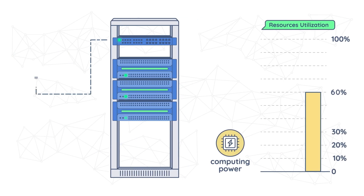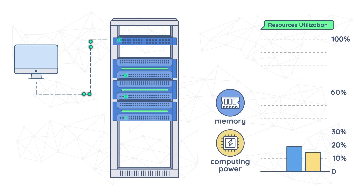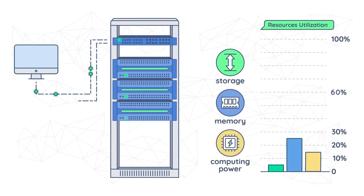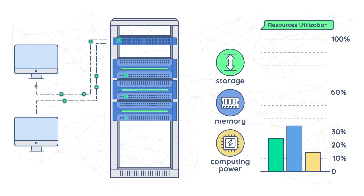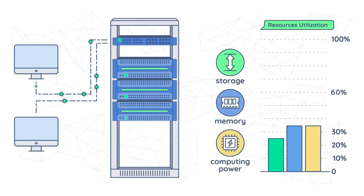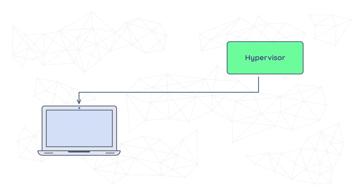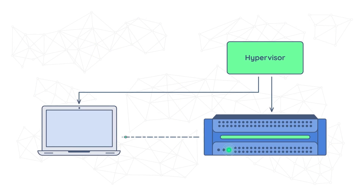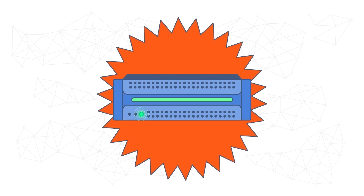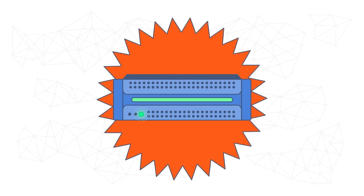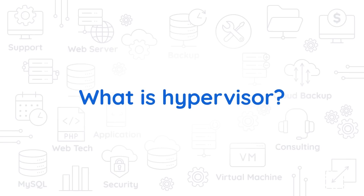Virtualization is overseen by software called hypervisors, which separate the physical resources from the virtual environments so that every layer uses only specifically allocated resources. Hypervisors can be deployed on top of an operating system, like on a laptop, or be installed directly onto hardware, like a server. The latter is how most businesses choose to virtualize.